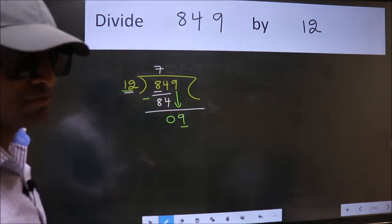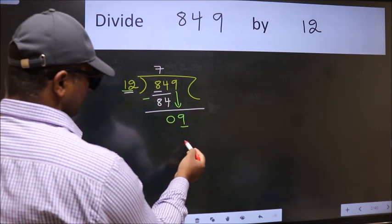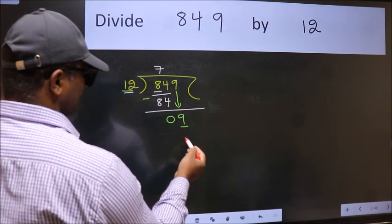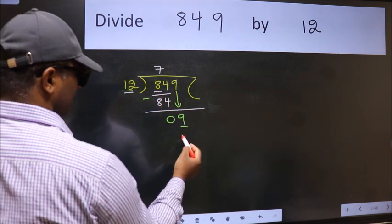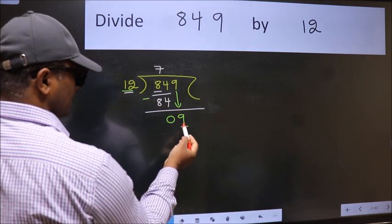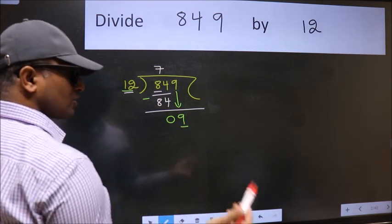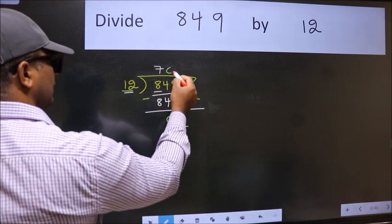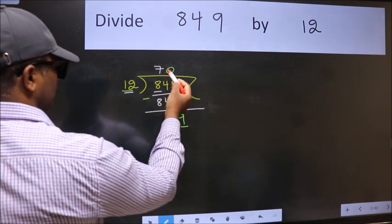Instead of that, what we should think of doing is, which number should we take here. If I take 1, we will get 12. But 12 is larger than 9. So what we do is, we take 0 here. So 12 into 0.